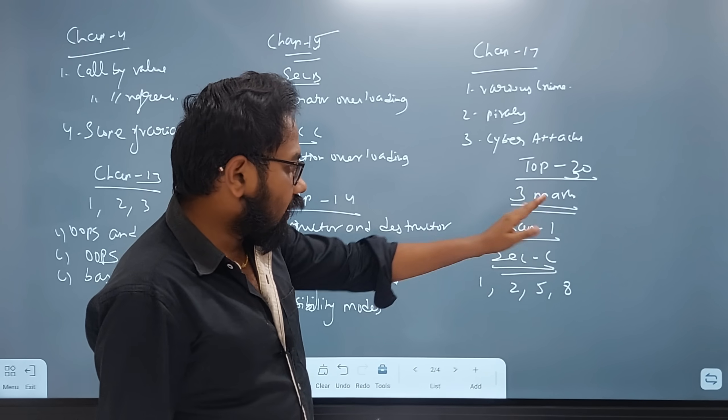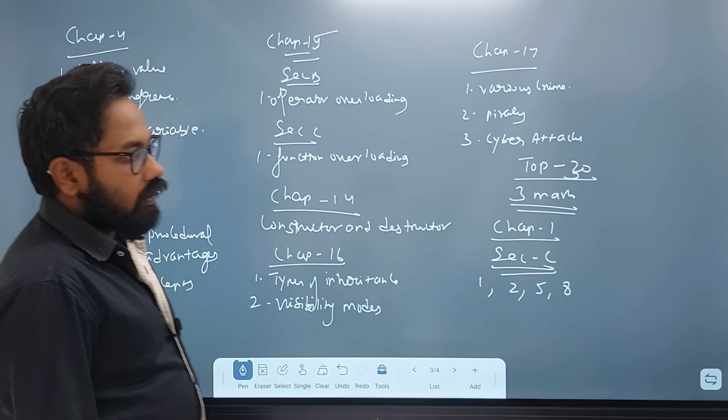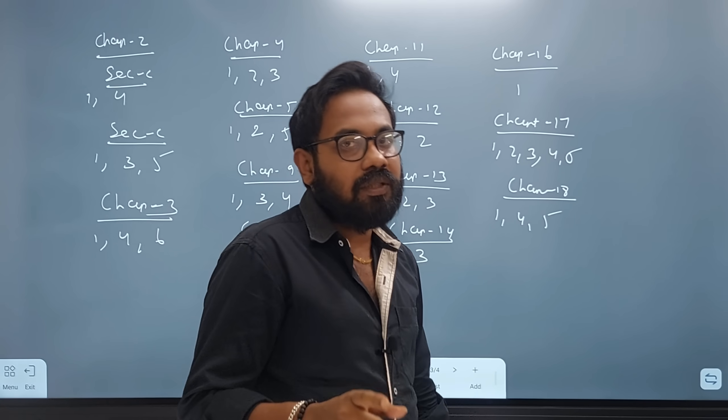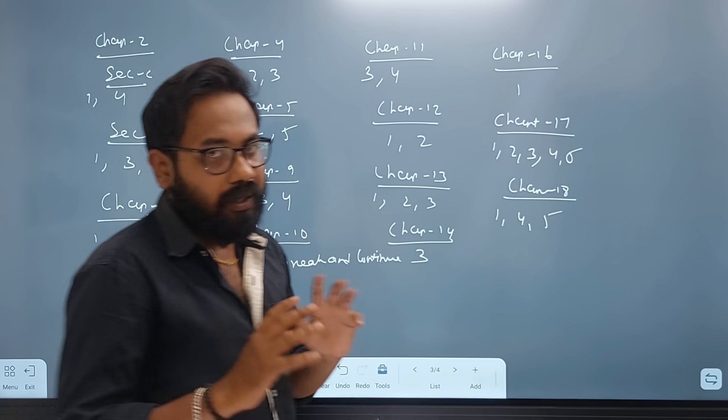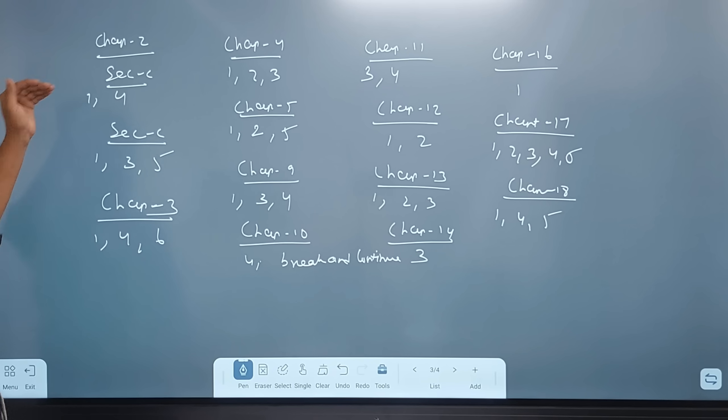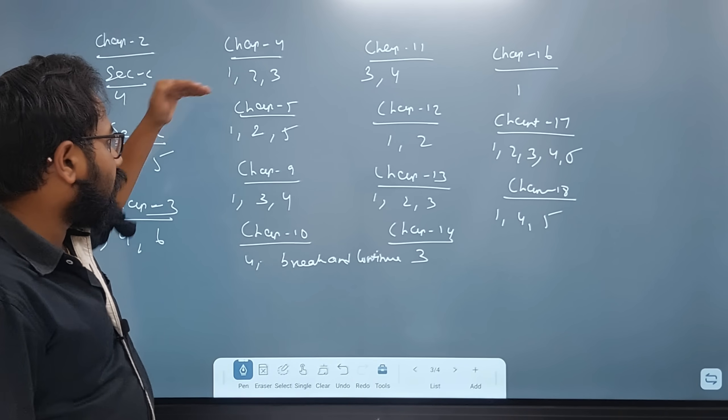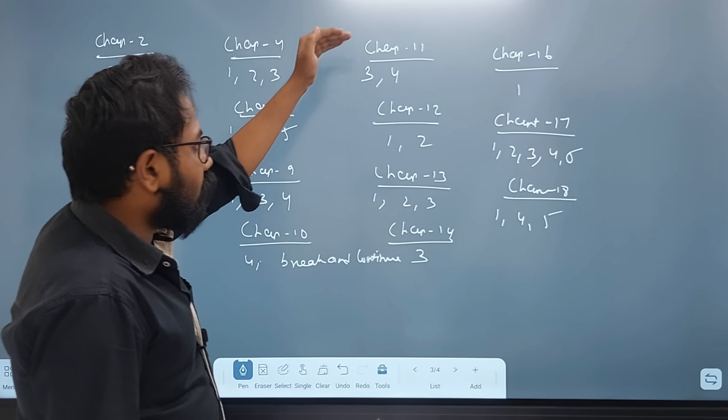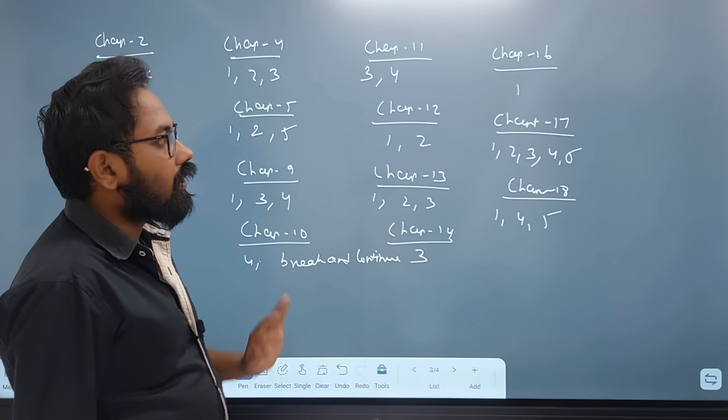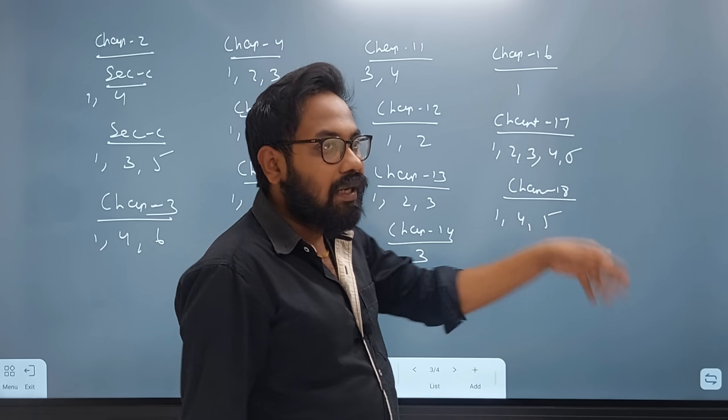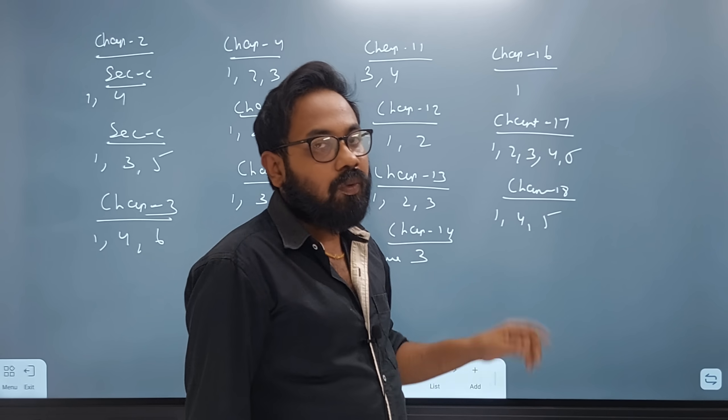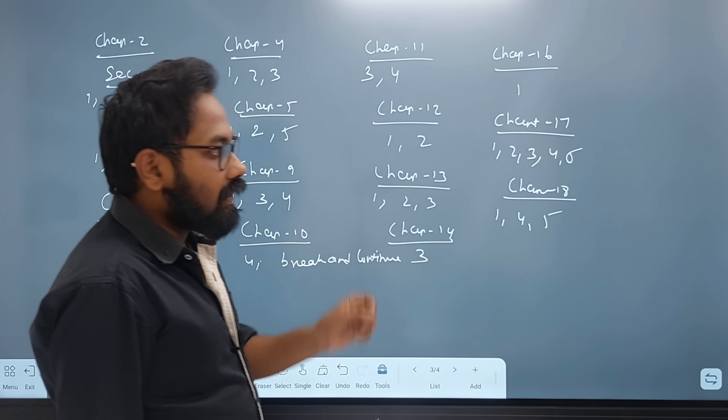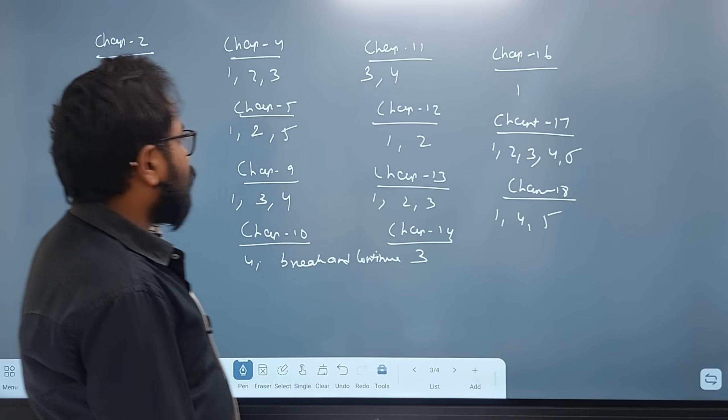Section C is 1, 2, 5, 8. You see 3 marks. Section C is 1, 4 Chapter 2. Chapter 3 is 1, 4, 6. Chapter 4 is 1, 2, 3. Chapter 5 is 1, 2, 5. Chapter 9 is 1, 3, 4. Chapter 10, 4th one. Chapter 12, Chapter 13 is 1, 2, 3. Chapter 14 is 3. Chapter 16 is 1st one. Chapter 17.